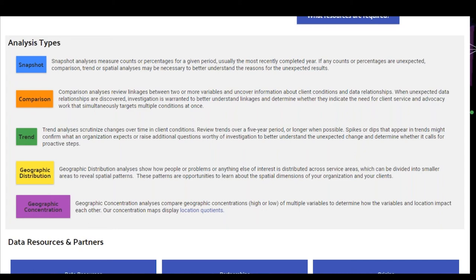The next section goes through the types of analyses with examples included in the site. A snapshot measures counts or percentages for a given period, usually the most recently completed year. If any counts or percentages are unexpected, a comparison, trend, or spatial analysis might be necessary to better understand the reasons. The other types of analyses incorporated here are comparisons, trends, geographic distribution, and geographic concentration.